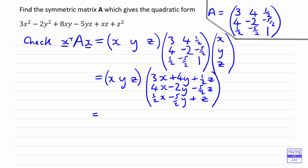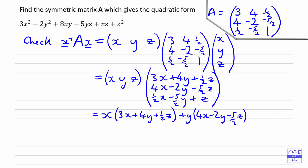Now for the final multiplication, we multiply x by the first element to get 3x plus 4y plus (1/2)z, then y multiplies 4x minus 2y minus (5/2)z, and z multiplies (1/2)x minus (5/2)y plus z.